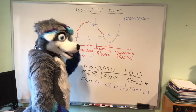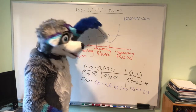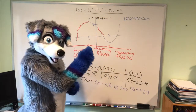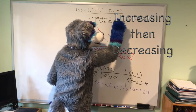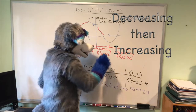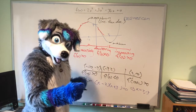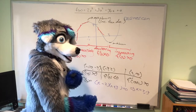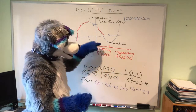From there, there's a natural thing to notice: if you're increasing and then decreasing, you have to have a maximum at that point — because you're going up and then coming down. In the same way, if you're decreasing then increasing, you have a minimum. This is what's known as the first derivative test: if your derivative changes sign from positive to negative at a point, you have a maximum; if it changes from negative to positive, you have a minimum.